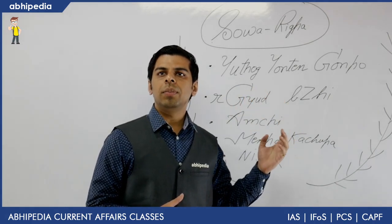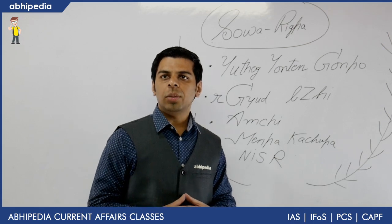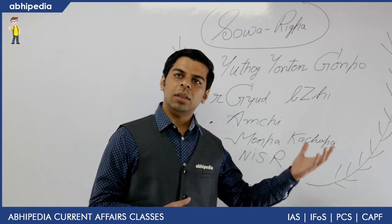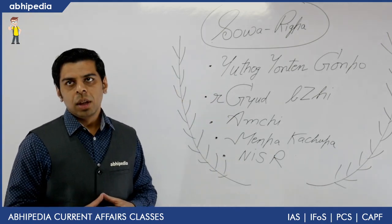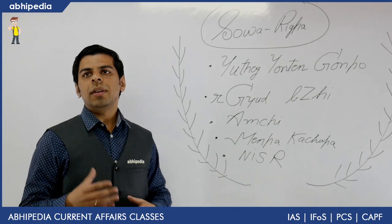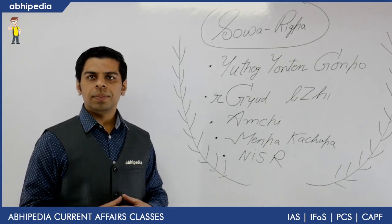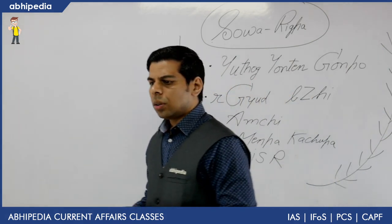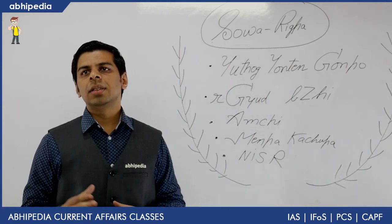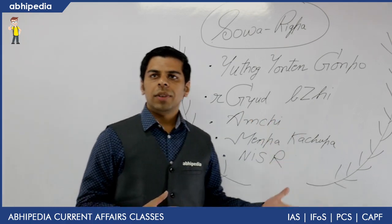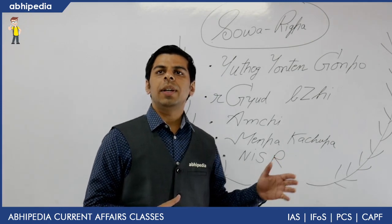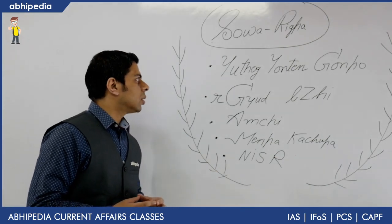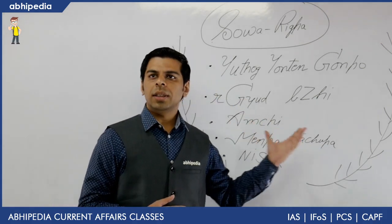The next question is whether it is some traditional system or a new technology recently developed — because if a prelims question is asked, they are likely to confuse you on this aspect. Sova Rigpa is a Tibetan traditional medical system, touted as one of the oldest living and well-documented traditional medical systems in the world. Its concept and practice are largely common with Ayurveda, but over the years it has been enriched with Chinese, Greek, and Ayurvedic systems, emerging as a major traditional system with minimal side effects.